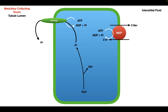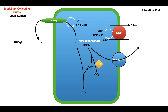The hydroxide ions can combine with carbon dioxide to form bicarbonate, referred to as new bicarbonate. This new bicarbonate can then be transported into the interstitial fluid through different transporters. Inside the tubule lumen, we once again have hydrogen phosphate, which combines with protons to form dihydrogen phosphate, which can be excreted through the urine.